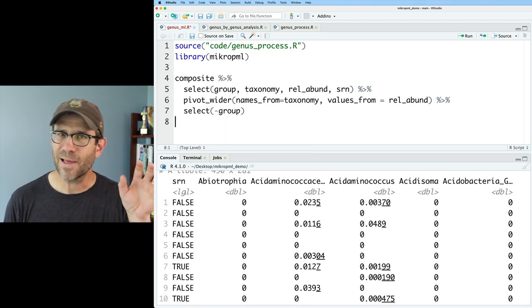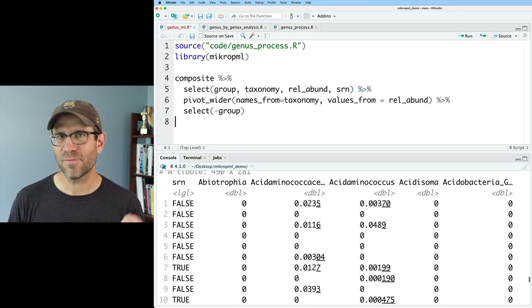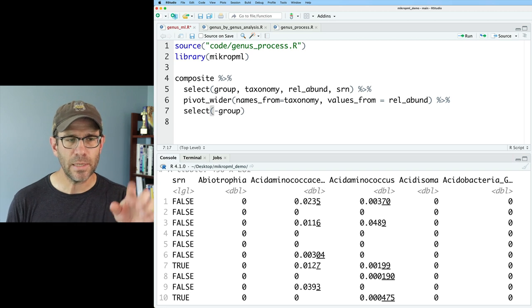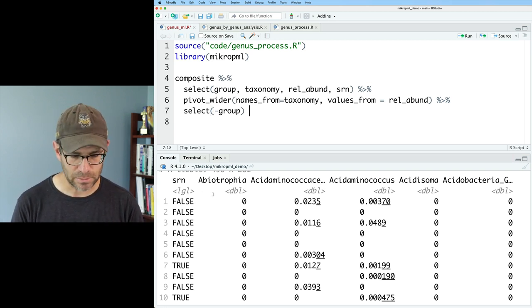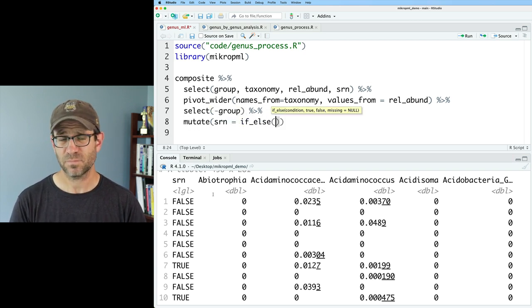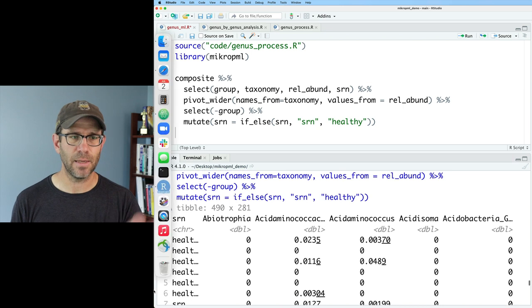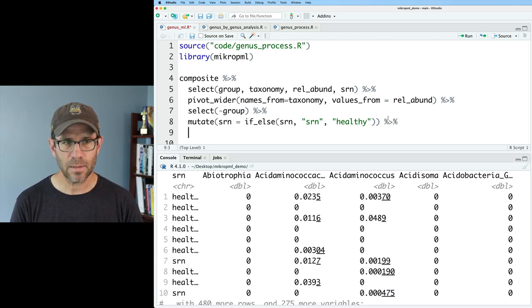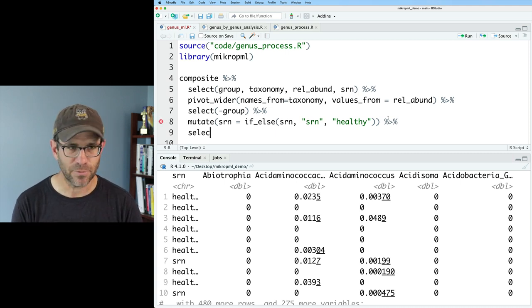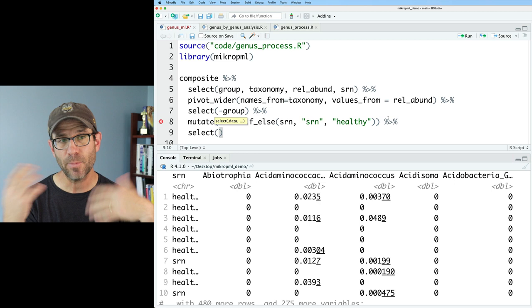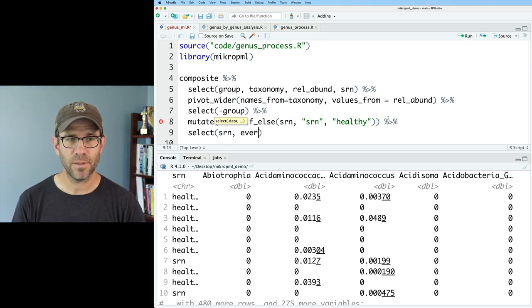Again, we have this composite data frame and we're now ready to feed this into microp_ml. But I need to do library microp_ml. And to get composite to work with microp_ml, I need to have each of my features as a separate column in the data frame. So when I say features, that's anything that goes into the model. So I might decide to put in the fit result. I might put in the person's sex. I might put in their age. But I'm also going to put in their like genus relative abundance data. So for now, I'm only going to look at the microbial features of the community. So again, we'll do composite. And I'm going to pipe that into a select where I can get the group taxonomy rel_abund. And I also need then SRN because I'm going to be predicting whether the person has a screen relevant neoplasia.